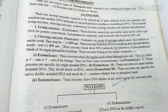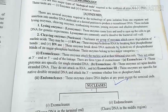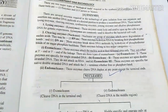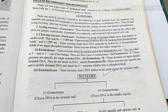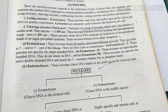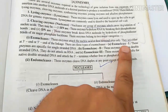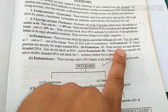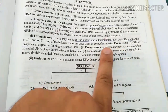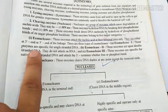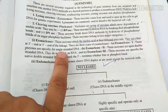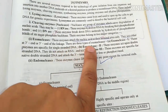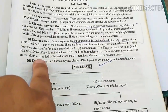This enzyme is called exonuclease. Exonuclease is classified as exonuclease 1, 2, and 3. Exonuclease 1 acts on single-stranded DNA, and exonuclease 2 acts on double-stranded DNA.